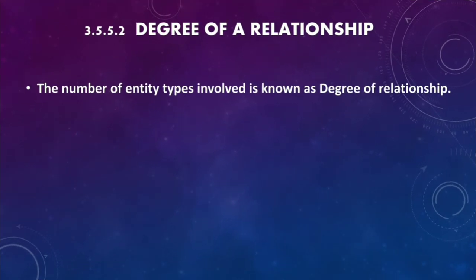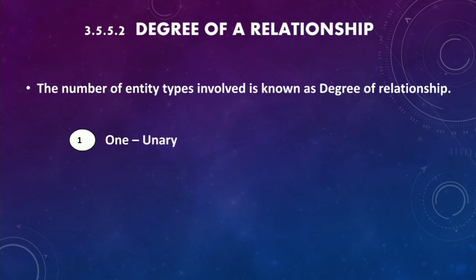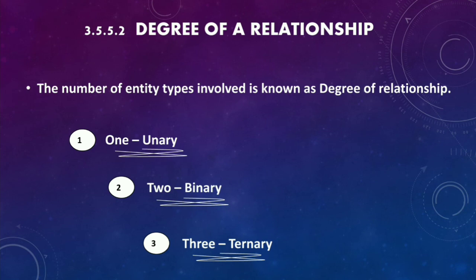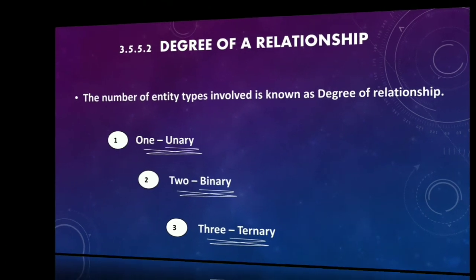The number of entity types involved in a relationship is known as the degree of relationship. There are three types: if an entity is related with one entity, it is called unary; if related with two entities, it is called binary; if related with three entities, it is called ternary.